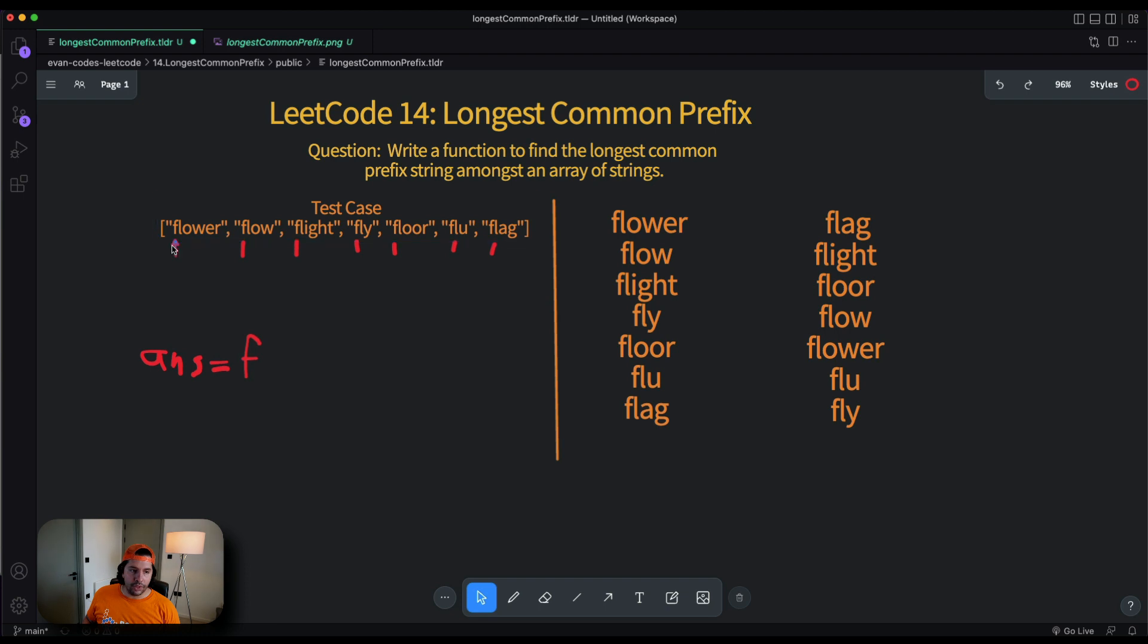Moving on, what we need to do is move that pointer to the second element of the first string. Let me erase that dot and we need to continue doing the same thing. So we check if in the second string the second element is an L, third string, fourth string, fifth etc. I think you can understand that there is a rabbit hole here because that requires two loops aka it's not linear time complexity. All right so let's move again to the next element. So here we have an O and the final answer is FL.